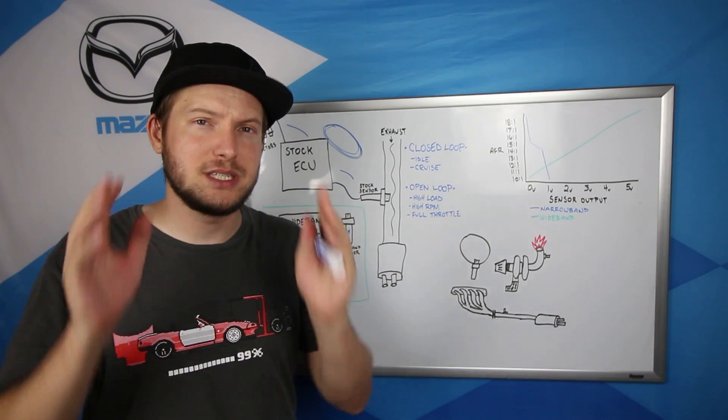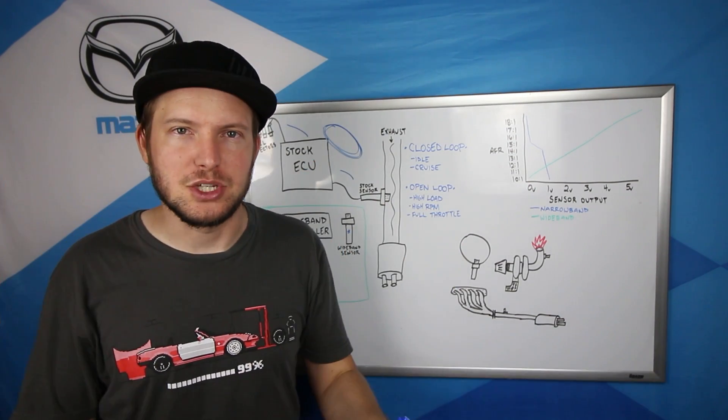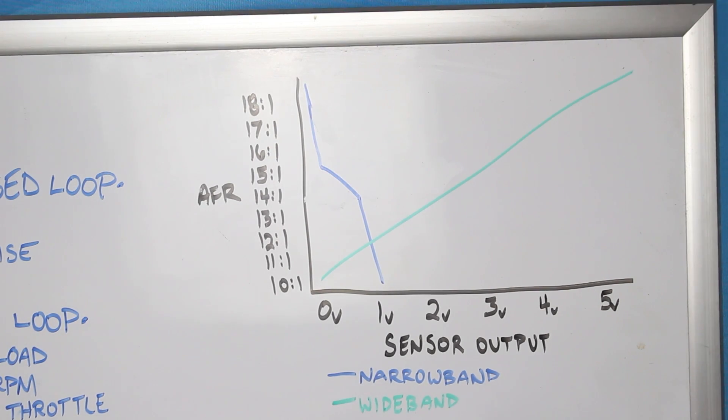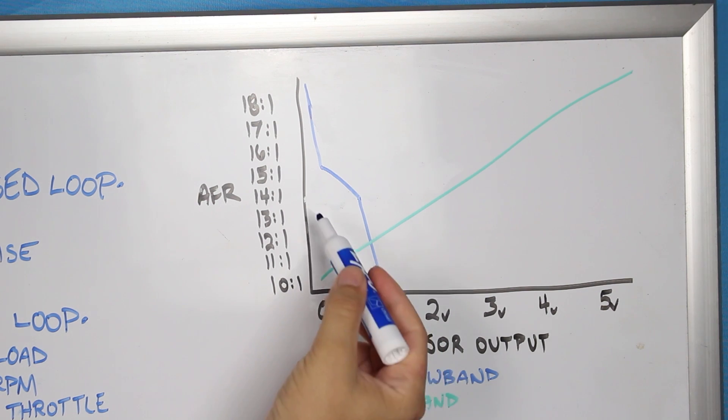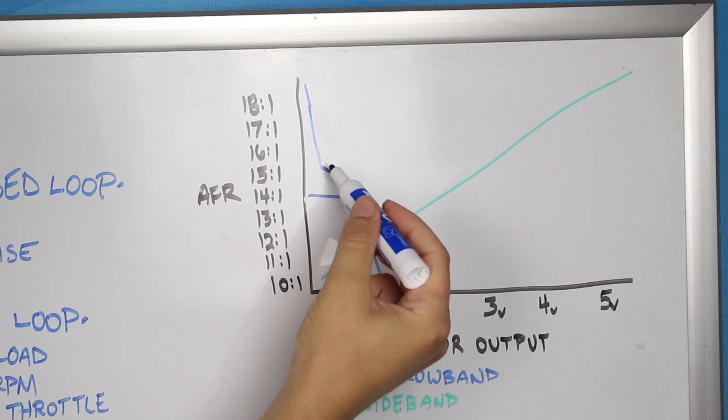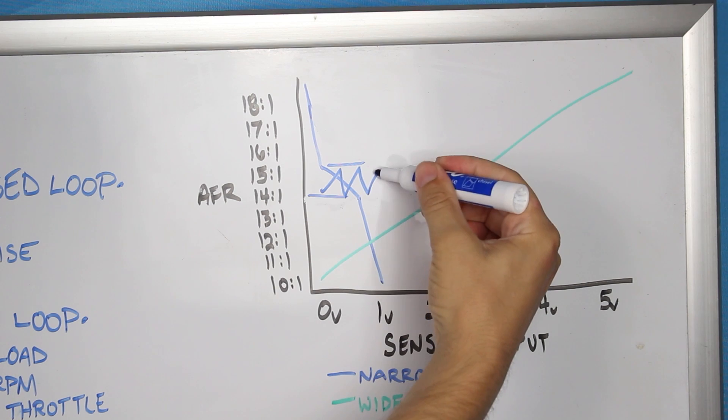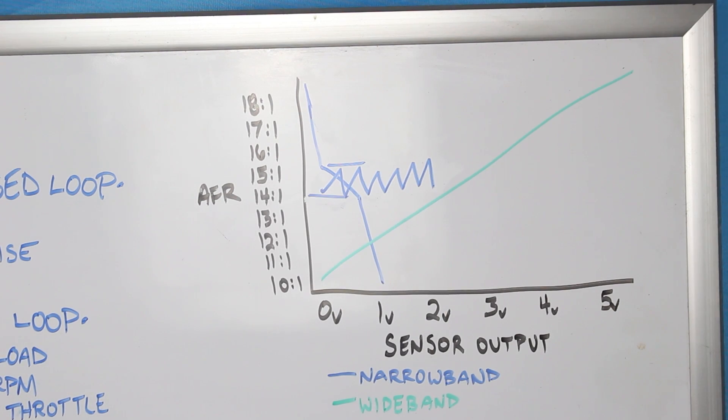The last thing I want to talk about with stock systems is what does it mean when we say a narrowband sensor and why are widebands so much better? This is a graph of the voltage signal output of a narrowband and a wideband oxygen sensor. Let's take a look at the narrowband in blue. It can output between 0 and 1 volts and the only place it has any resolution is right here between 14 to 1 and 15 to 1 AFR.